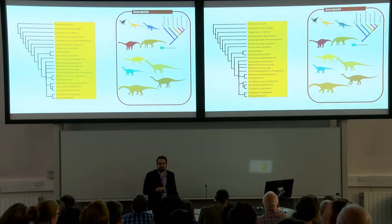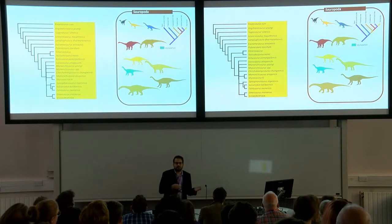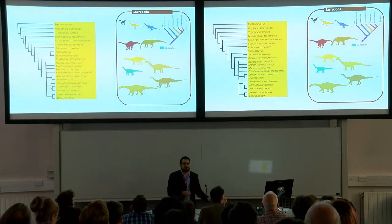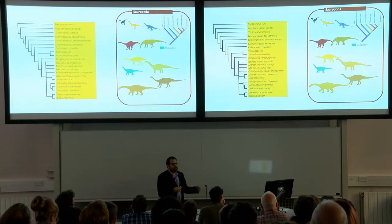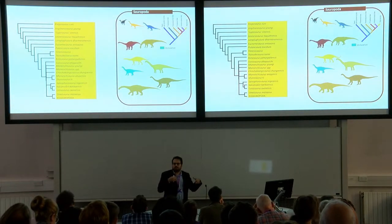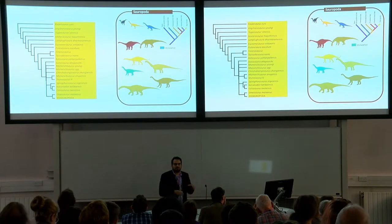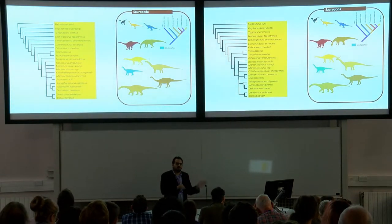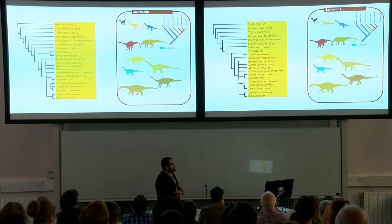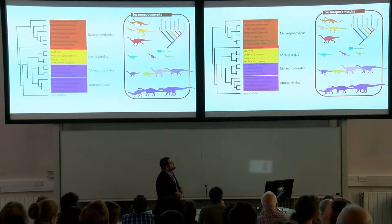So it means that quadrupedality is something that originated multiple times throughout the evolution of basal sauropodomorphs. The gradient topology is still supported, but it's not as simple as that — there is no single bipedal-to-quadrupedal transition. But this is only using discrete characters.